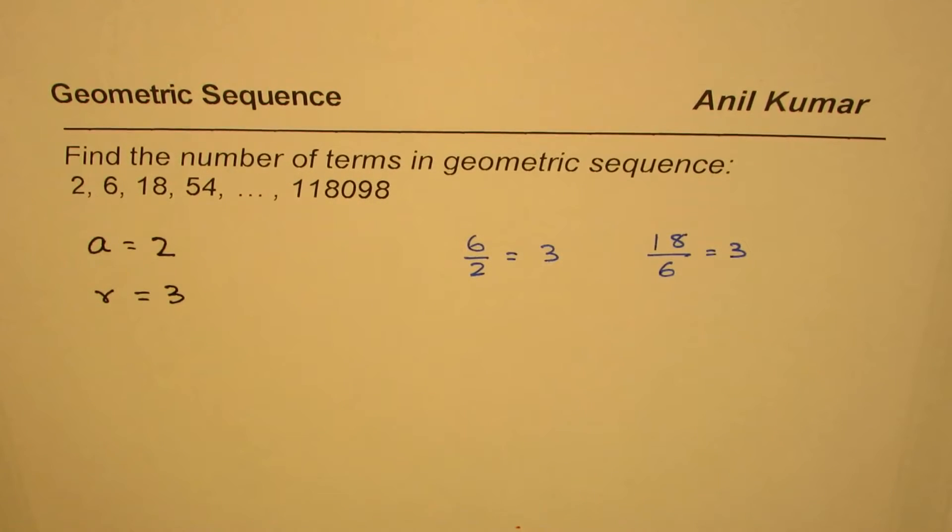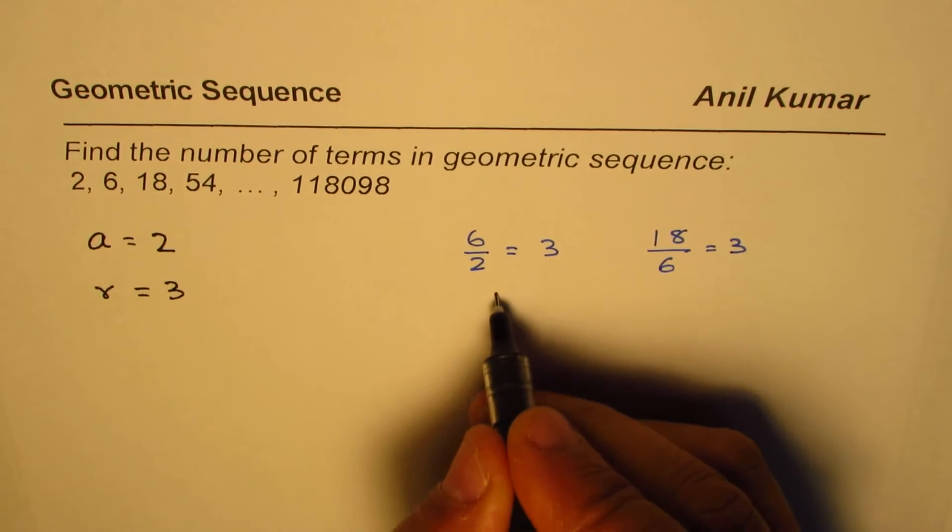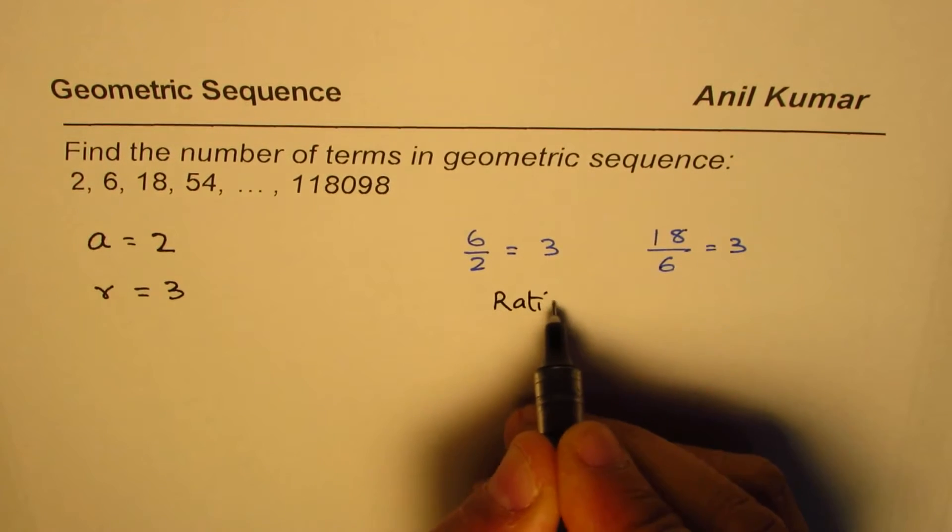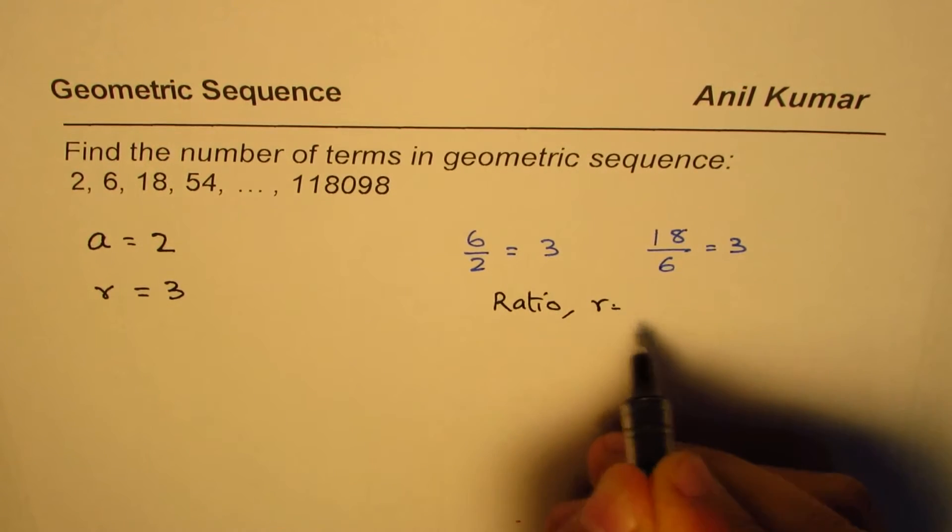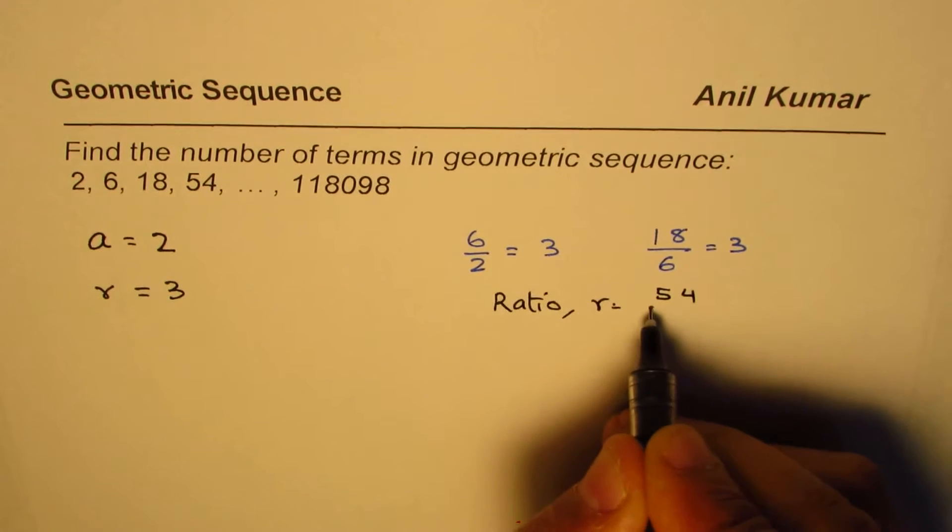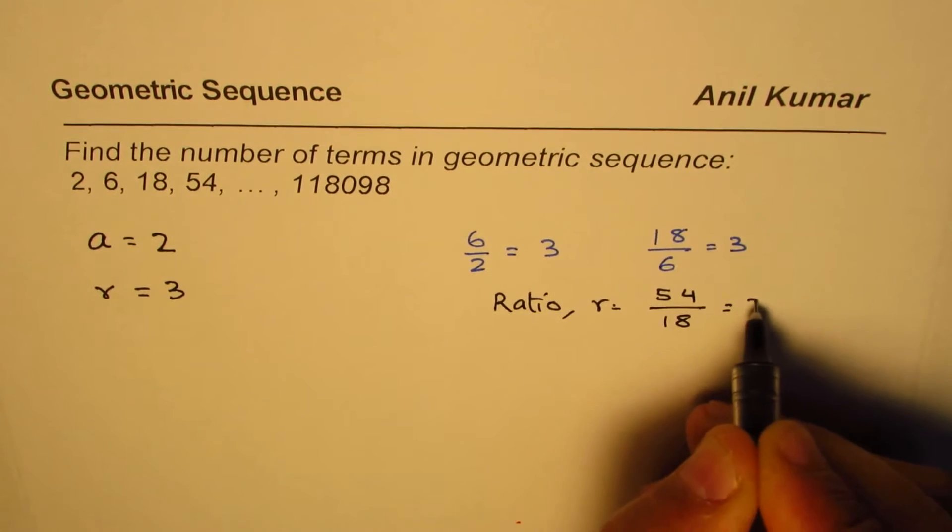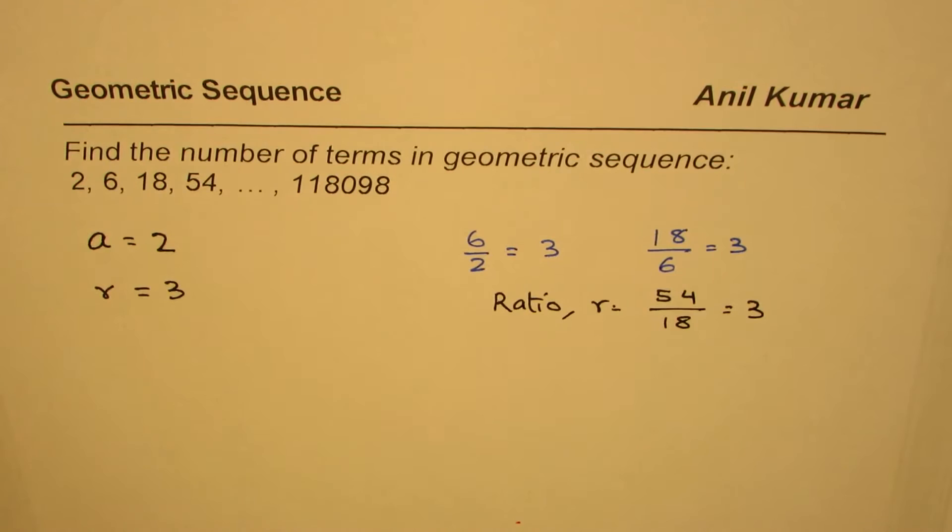The ratio of these numbers is 3, so ratio r, that is what we mean, ratio r is 3. We could do 54 over 18, will again get 3. So the geometric series is the one which is always having fixed ratio.